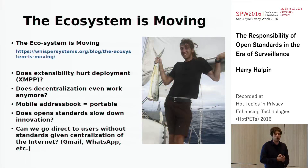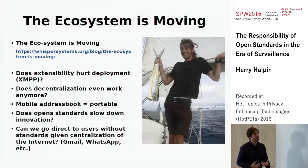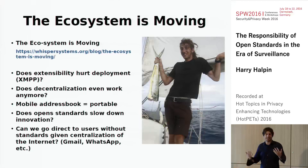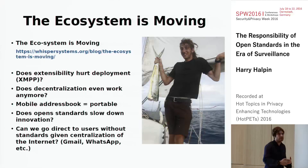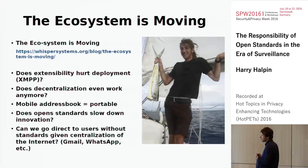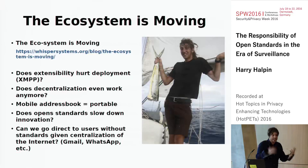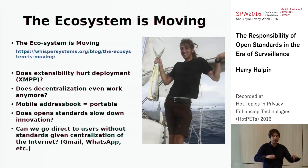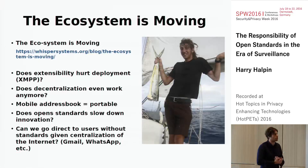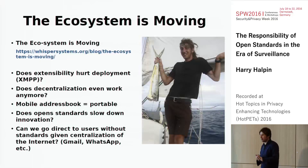Does extensibility hurt deployment? You can't control what's on the other endpoint. XMPP is a classic case of this, and the deployment of OTR inside XMPP is another example. One clear advantage of XMPP is that it is decentralized — you have identifiers and can run your own XMPP server, so jabber.cc.de can talk to jabber.org.